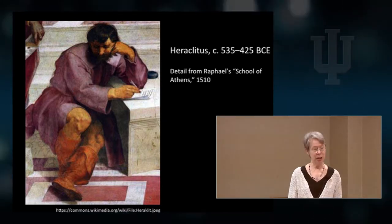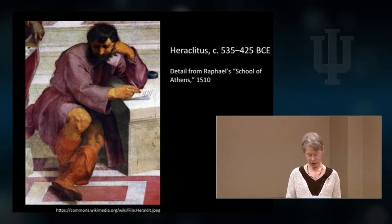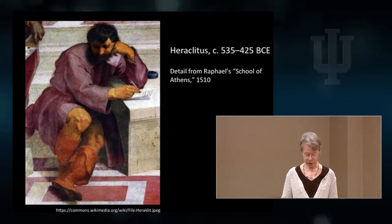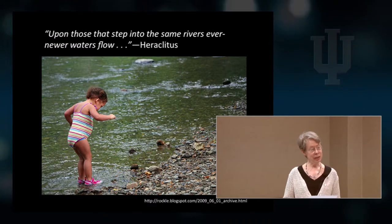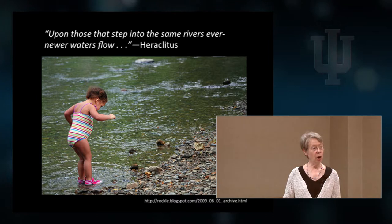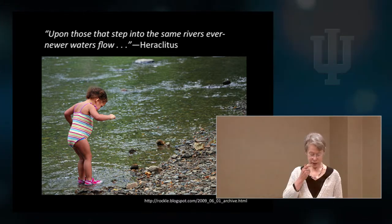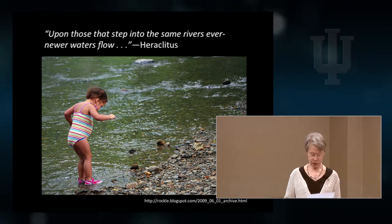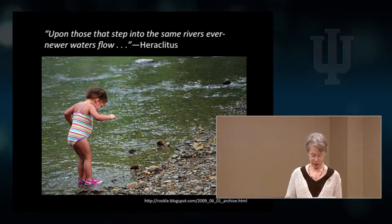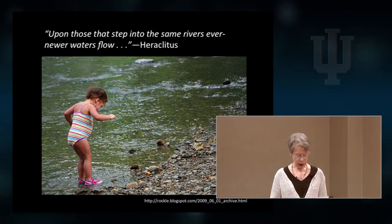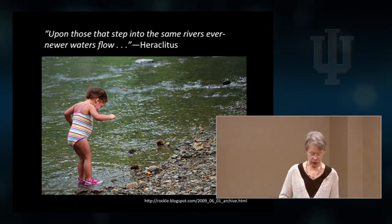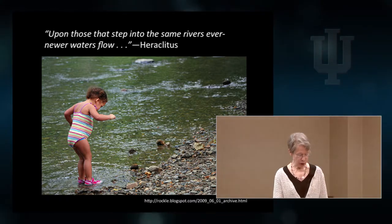He was called obscure by his contemporaries and the weeping philosopher by the Romans. Plato and Aristotle accused him of denying the law of non-contradiction, claiming the identity of opposites, and positing that everything that is the same is actually different. Even today, philosophers disagree on how to interpret his cryptic statement about the river. Did he mean that rivers can stay the same over time, even though or indeed because the waters change? That is, the stability of larger structures is made possible by the fact that constituent elements within them change.